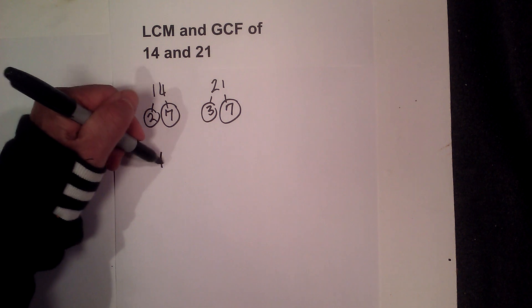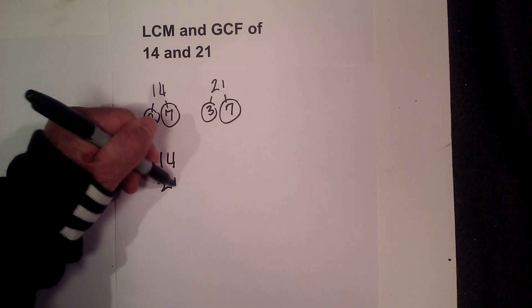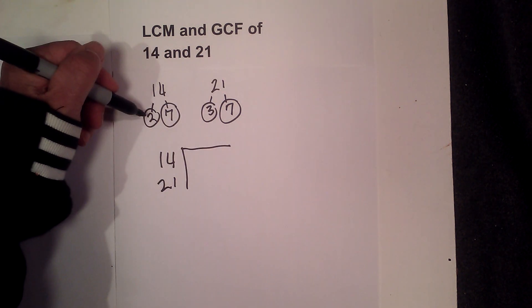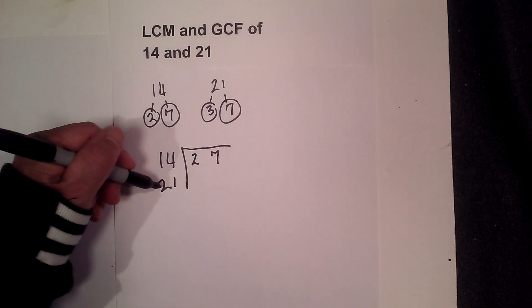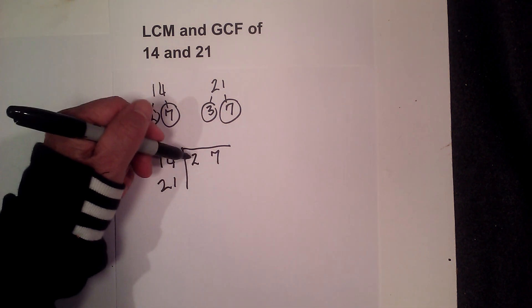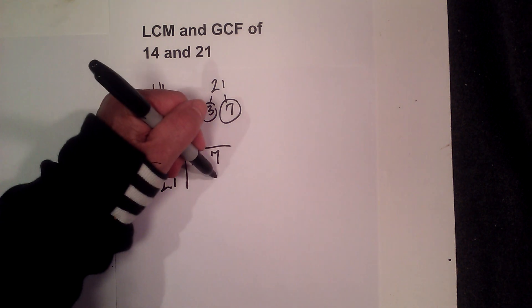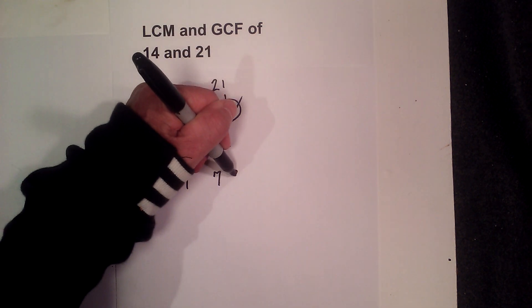Now I just create a little chart, a prime number chart. Prime numbers of 14 are 2 and 7, and for 21 I'm gonna skip this space here because I don't have a 3, and write the 7 and then a 3.